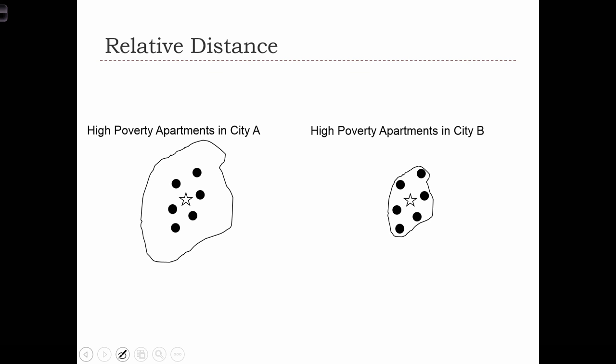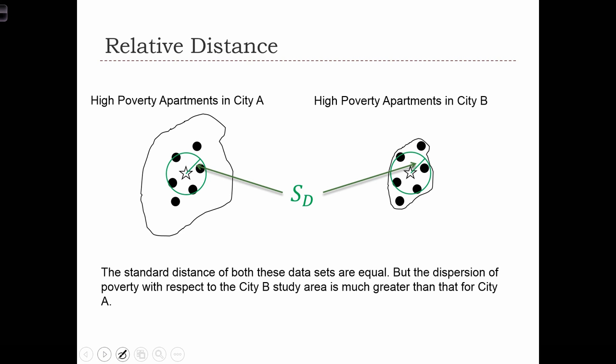Imagine the case where we have two cities. City A is quite large, while City B is quite small. In either case, we've identified the locations of the high-poverty apartment buildings in the city. As we can see from these two point distributions, the level of dispersion in the two distributions relative to the mean center of the distributions is the same. If we were to calculate the standard distance statistic for each of these two point distributions, we would find them to be equivalent. In fact, we've done this over here, and we see that the radius of the two point distribution standard distances are equivalent.